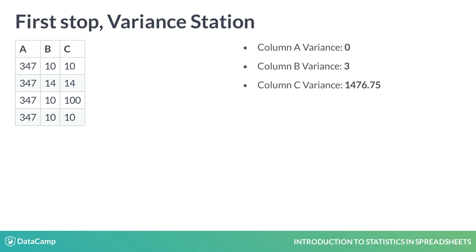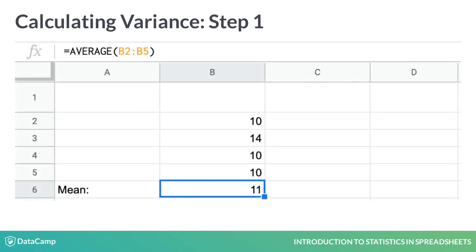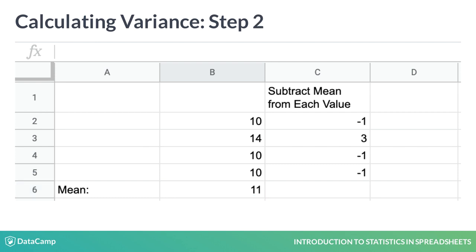To calculate variance, first calculate the mean: 10, 14, 10, and 10 divided by 4 equals 11. Next, subtract the mean from each value. For the first, third, and fourth values, 10 minus 11 is negative 1. For the second value, 14 minus 11 leaves 3.